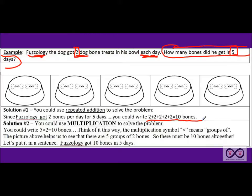Well there is a faster and easier new and improved way and that is solution two. You could use multiplication. And you could write five times two equals ten bones. You could think of it this way. The multiplication symbol means groups of.